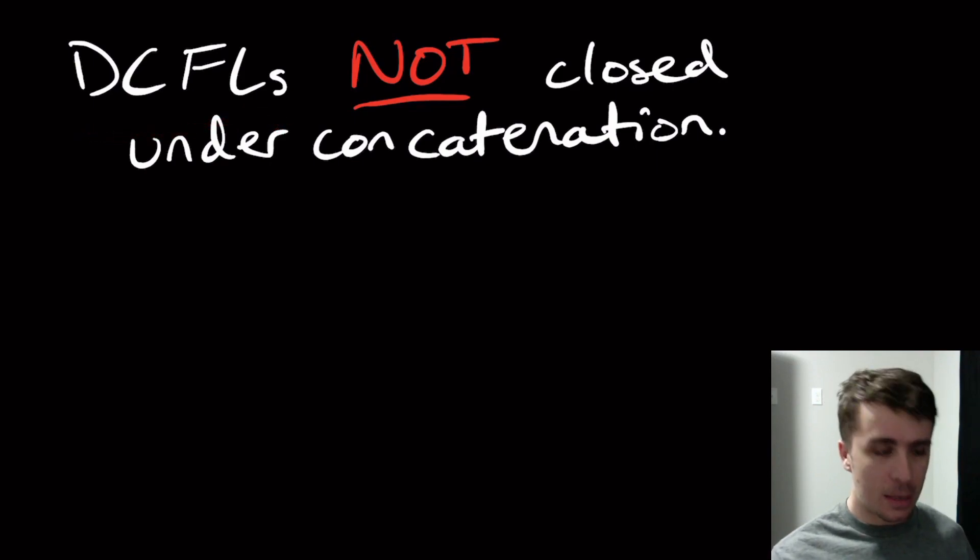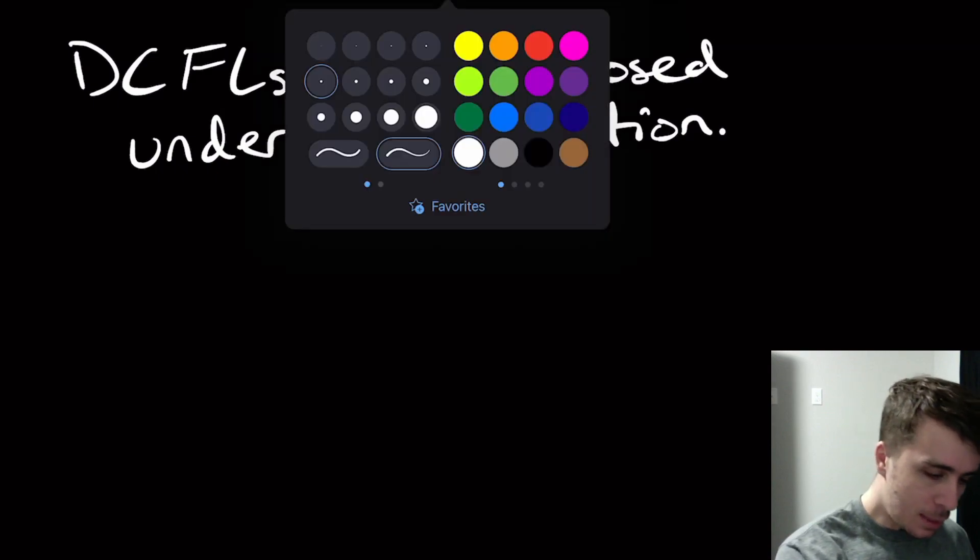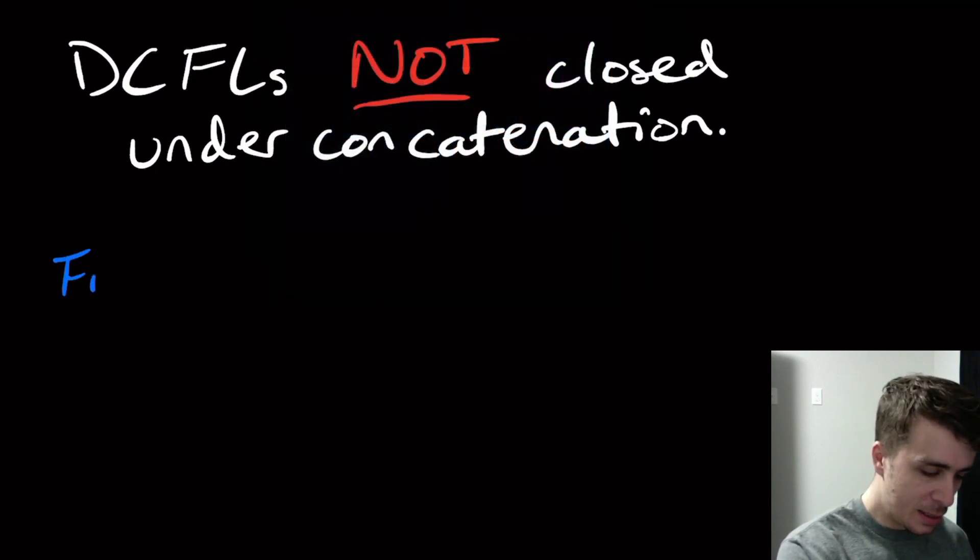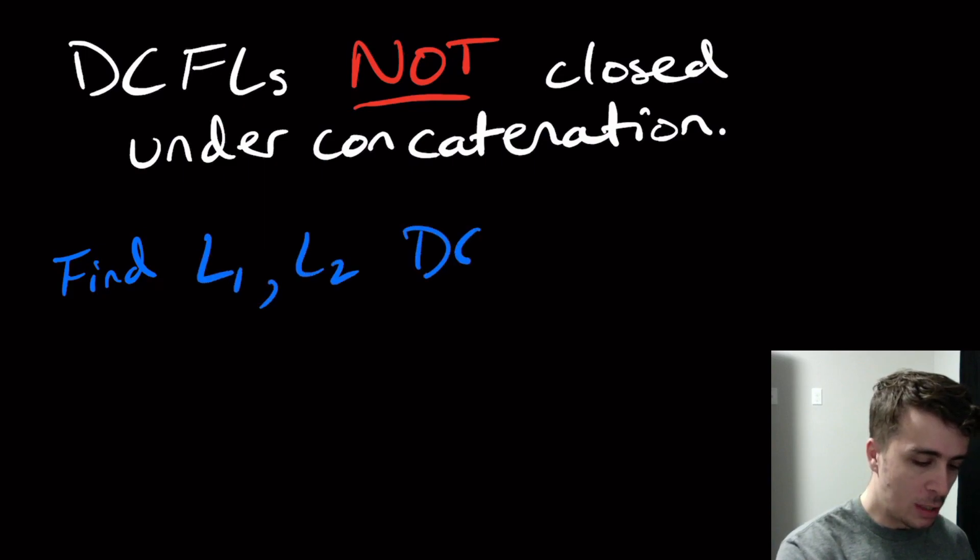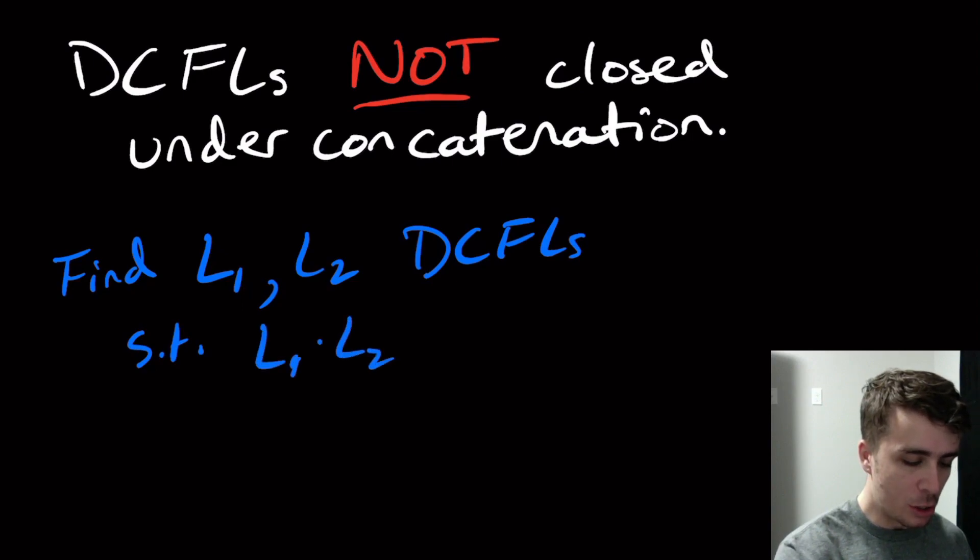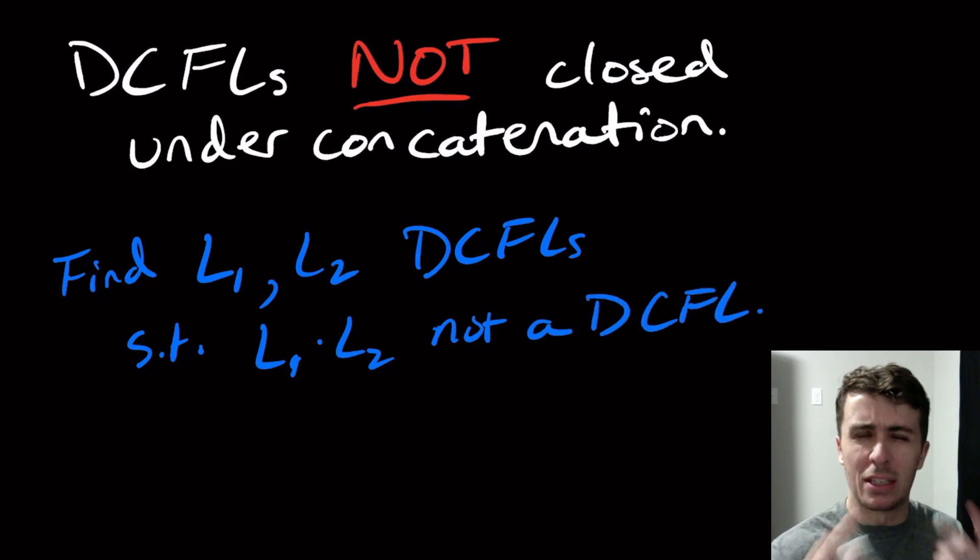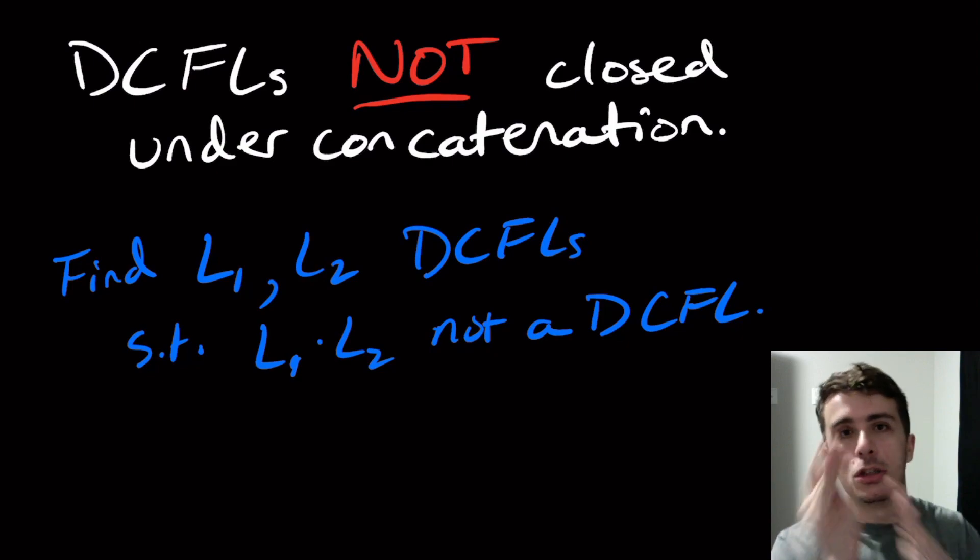So the main idea here is that we need to find two languages, L1 and L2, which are DCFLs, such that L1 concatenated with L2 is not a DCFL. That's what it means for it to not be closed under concatenation. There's an example of two languages where their concatenation is not a DCFL.